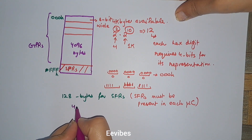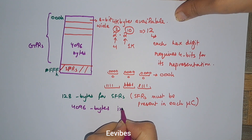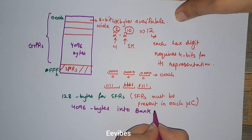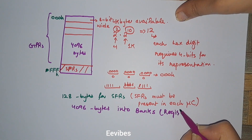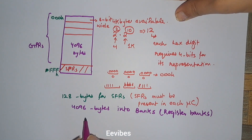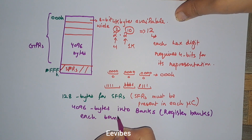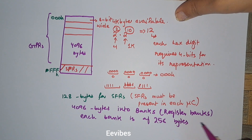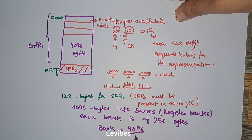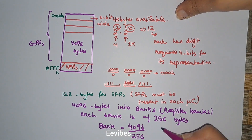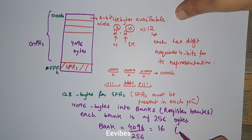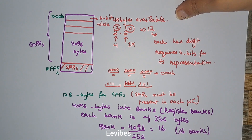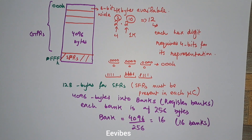We have further divided these 4096 bytes into banks, also known as register banks. Each bank is 256 bytes in size. So the total number of banks available can be found by dividing the whole memory size by the size of one bank: 4096 divided by 256 equals 16. So overall, 16 banks are available in the PIC microcontroller. Now let's have a look at how these banks are actually composed.